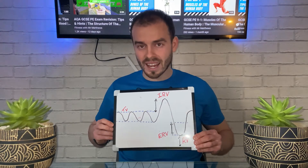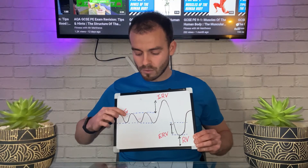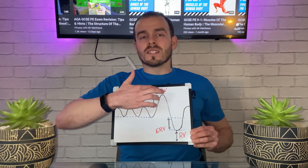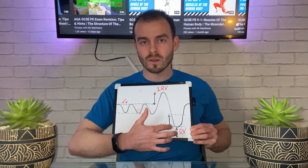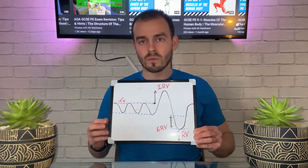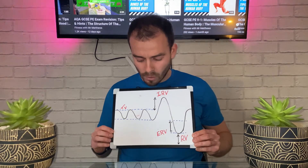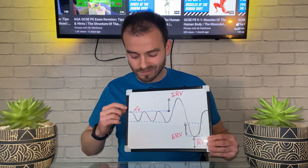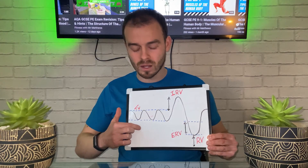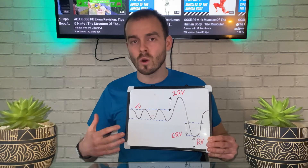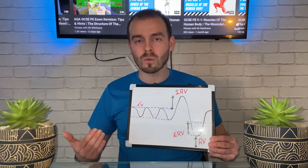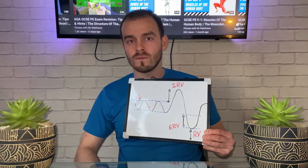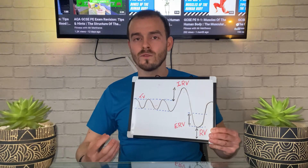To run through that again: tidal volume is the normal breathing pattern — in and out at rest. If I breathe in deeply and then forcefully blow out, I'm using my reserve volumes. This trace represents breathing at rest. During exercise, these lines become deeper and higher, taking up more space on the whiteboard, meaning we start to eat into our inspiratory and expiratory reserve volumes.